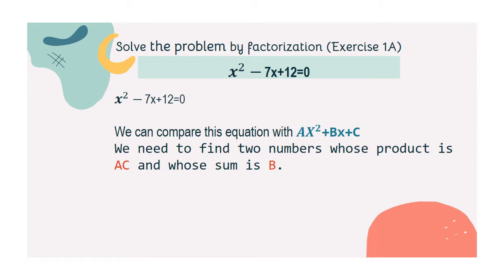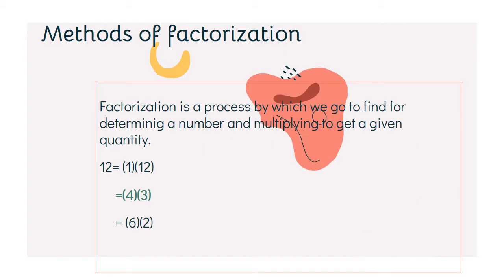We can compare this equation with ax squared plus bx plus c. We need to find two numbers whose product is ac and whose sum is b. If we add 4 and 3, then we can get 7 as desired.